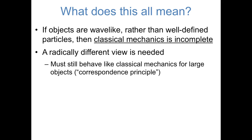Now that we've gone through all this historical context, we can think about what all of this means. We've seen that objects are inherently wave-like. In other words, we can't unambiguously talk about where any object is located. So the implication of that is that classical mechanics, Newtonian mechanics, is not complete, and we need a radically different way of thinking about things.